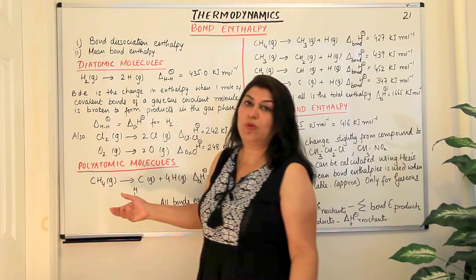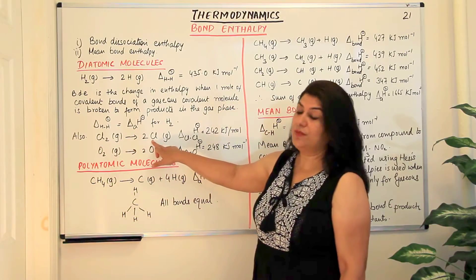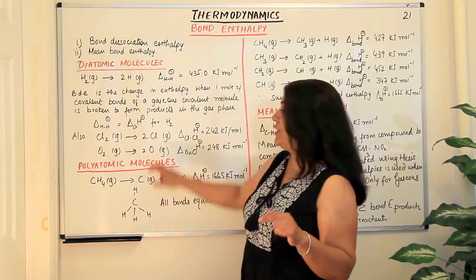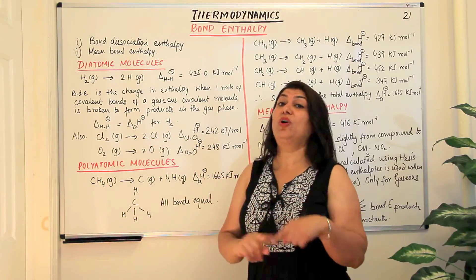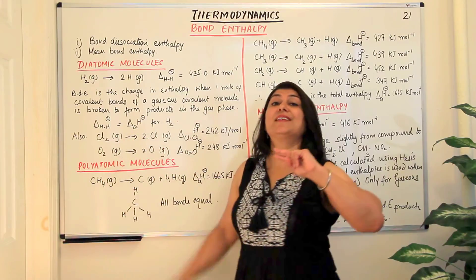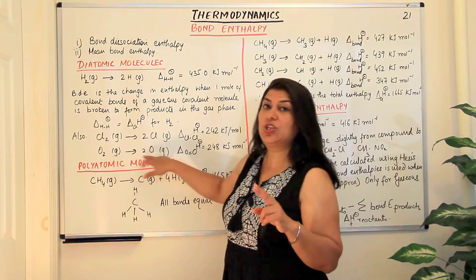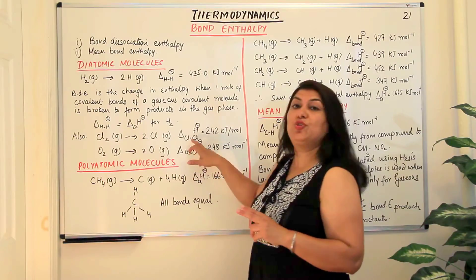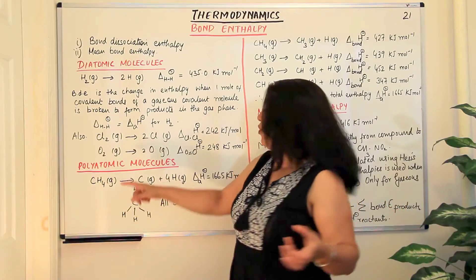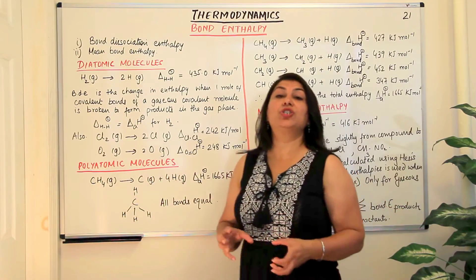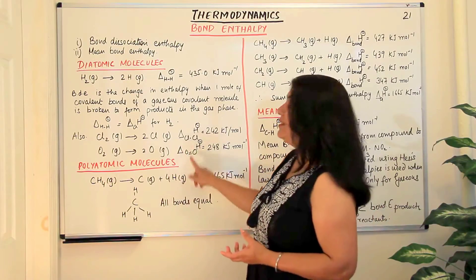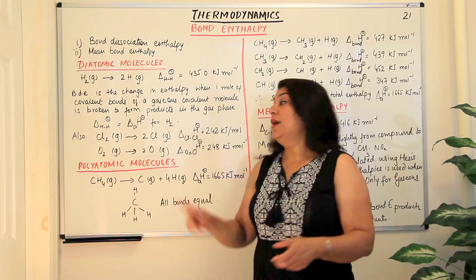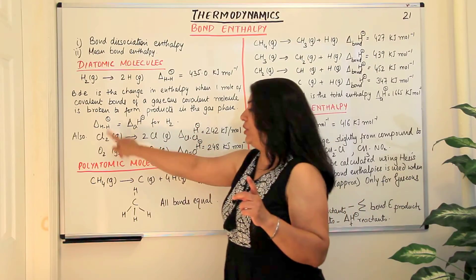For other diatomic molecules like chlorine breaking down to give two chlorine atoms, or oxygen breaking down to give two oxygen atoms — although there is a difference. In hydrogen and chlorine there is a single bond, but in oxygen there is a double covalent bond. When we calculate the bond dissociation enthalpy of oxygen, it comes out to be 248 kJ per mole — the energy required to break both bonds and separate them to form atoms. In chlorine and hydrogen, it was the energy to break one mole of single bonds.